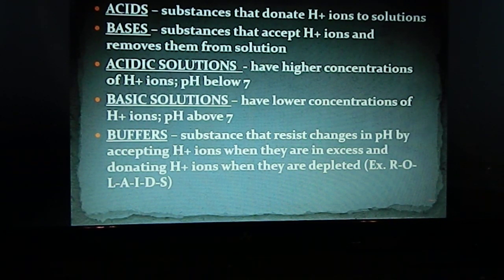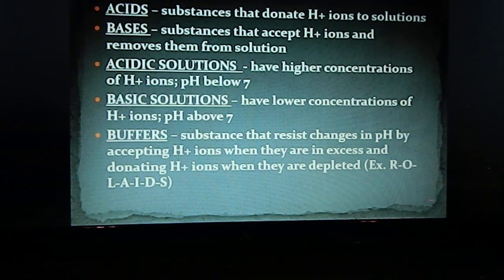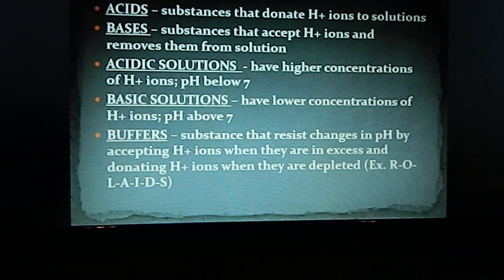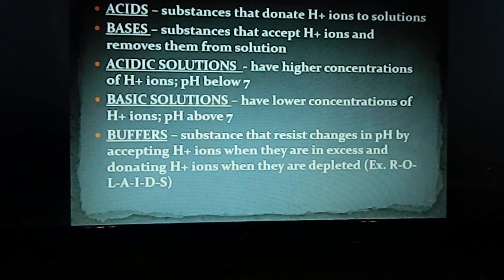So from pH seven down to zero are acidic solutions, and solutions with pH seven to fourteen are basic solutions. Substances can be put into a solution that help resist changes in pH — these are called buffers, and they work by either accepting hydrogen ions or donating hydrogen ions depending on the condition that exists.